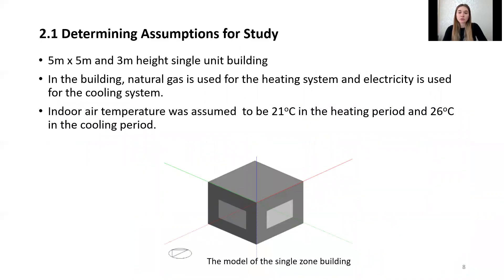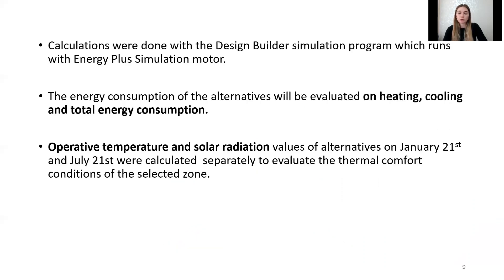As you can see, the dimensions of a single unit building evaluated in the study are five meters by five meters with three meter height and flat roof. A system running on natural gas was chosen as the heating system and an electrical system was chosen as the cooling system. In the calculations, indoor air temperature was assumed to be 21°C in the heating period and 26°C in the cooling period. Calculations of energy loss and thermal comfort conditions were done with the DesignBuilder simulation program, which runs with the EnergyPlus simulation engine.